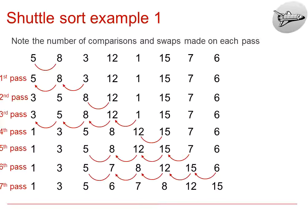In the fourth pass, we compare the 1 and the 12 and swap, and then the 1 and the 8 swap, 1 and the 5 swap, and the 1 and the 3 swap. Therefore, there were 4 swaps in that fourth pass, and the numbers are adjusted accordingly.